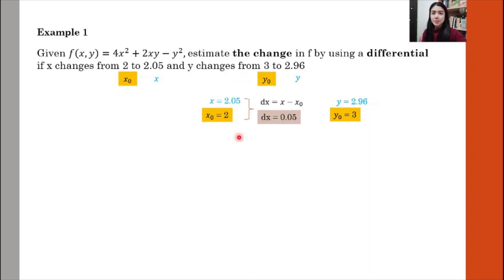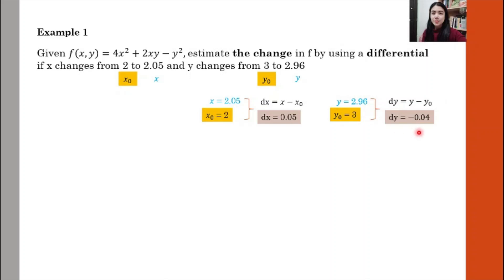Then we're going to find our dx. So dx is obtained from x minus x₀, which gives you 0.05. And the same thing for dy: we use y minus y₀, which gives dy equal to negative 0.04.